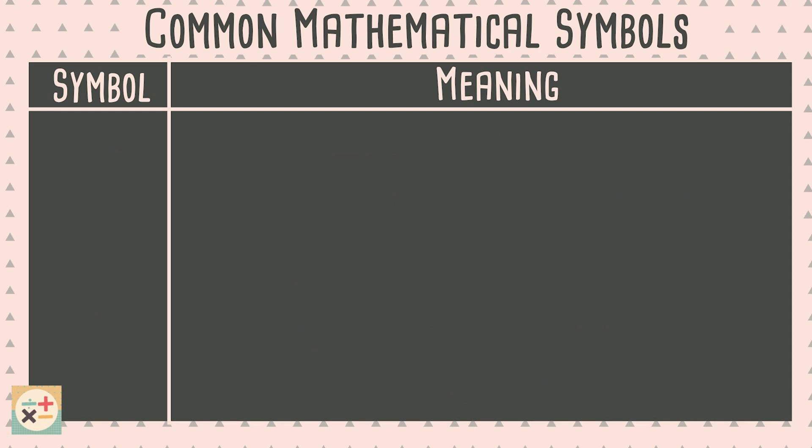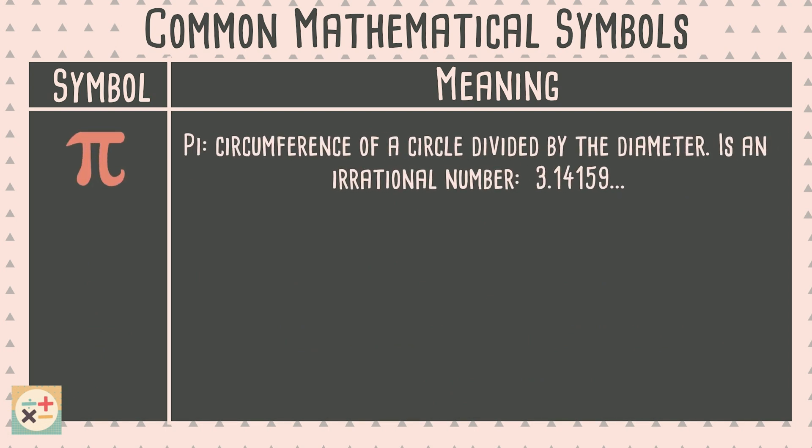Let's have a look at some more symbols. This symbol is called Pi and is often used when working with circles. It represents an irrational number which is a never-ending, non-repeating decimal number.